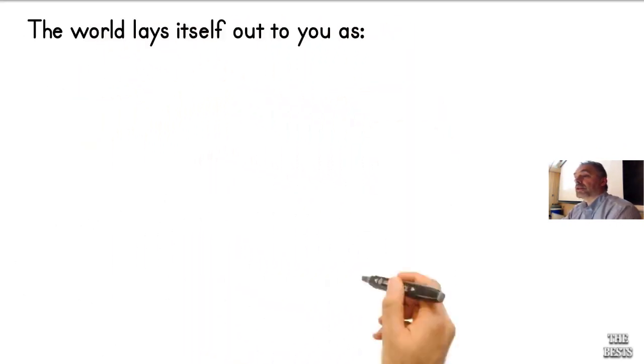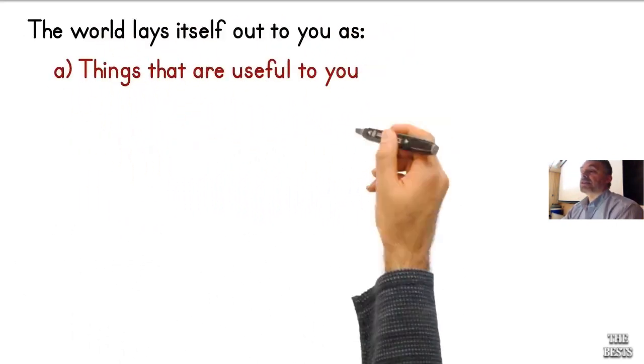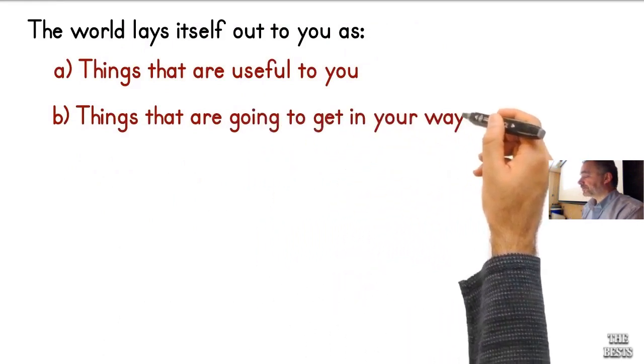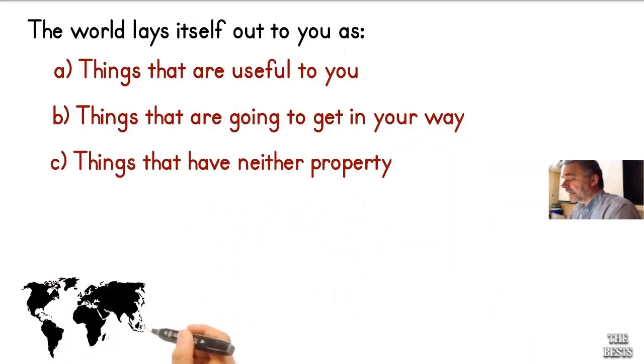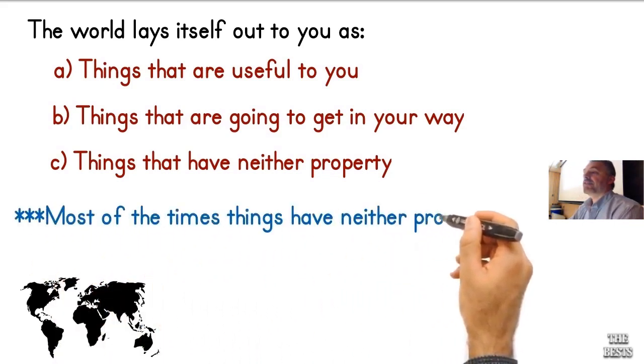Naturally, when you lay out the world, it lays itself out into things that are going to be useful for you, things that you're going to get in your way, and then things that have neither property.